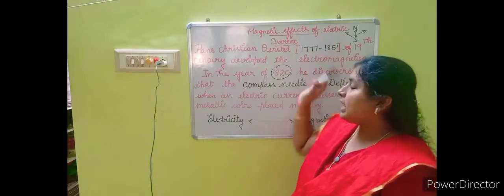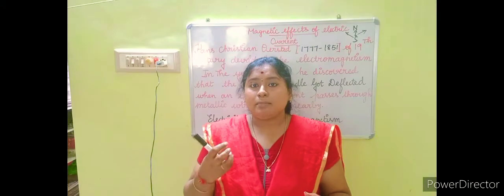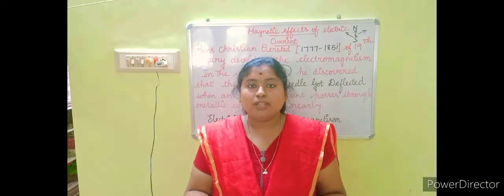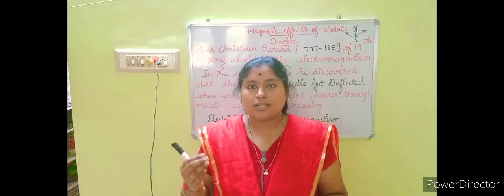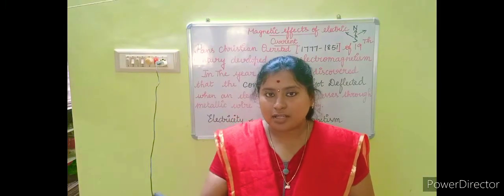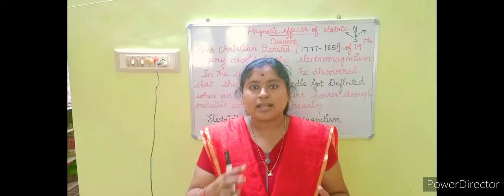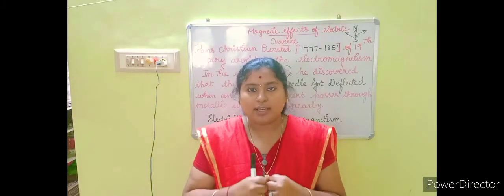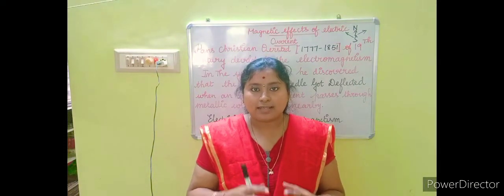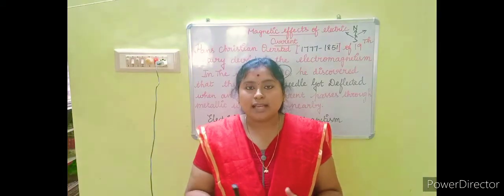The first topic is the magnetic effects of electric current — what magnetic effects an electric current can produce with the help of a magnetic field. When you apply an electric field to a particular object, what magnetic effects could that object produce by acquiring electricity? This concept was proposed by a scientist who lived in the 19th century.